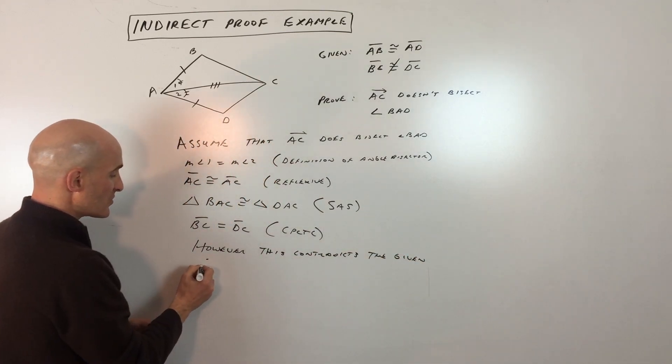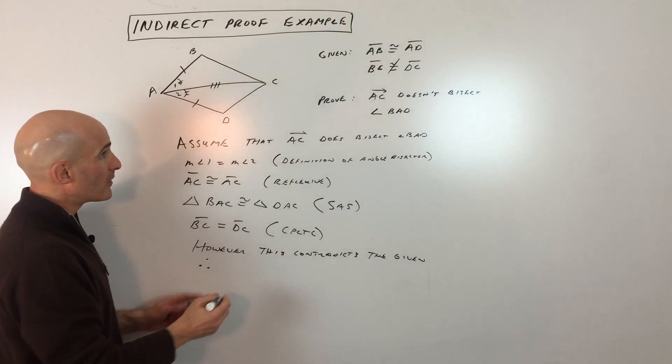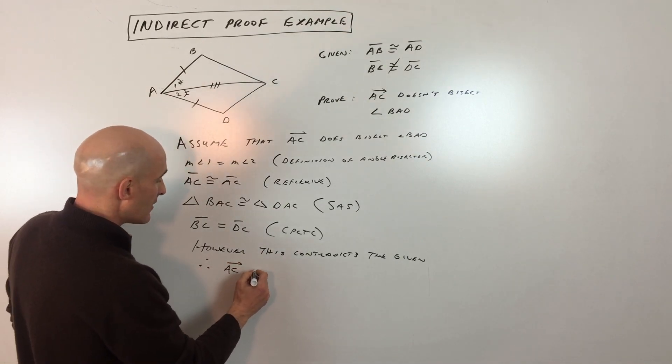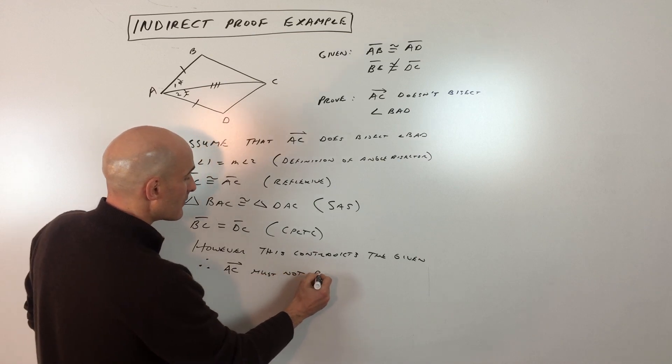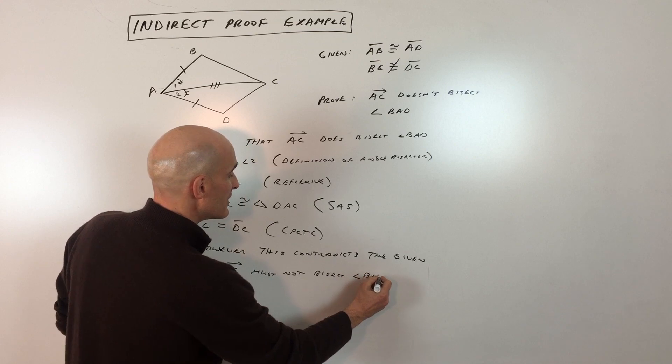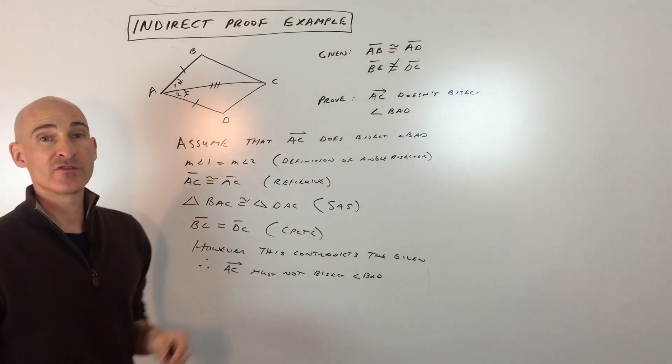Therefore—that's what these three dots represent—ray AC must not bisect angle BAD. That's exactly what we were trying to prove from the very beginning.